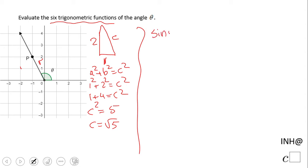Sine of theta is y over r. So in our case, when point P is (-1, 2) - this is x, this is y - that will be 2 over √5, which we can rationalize.